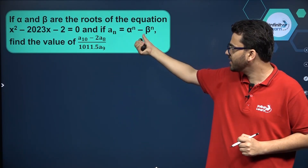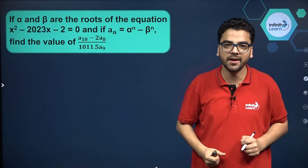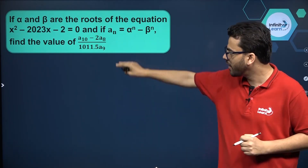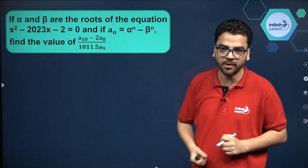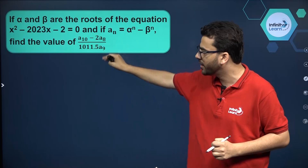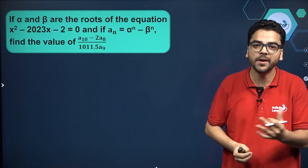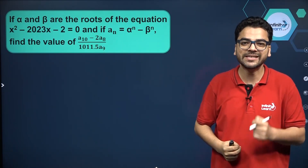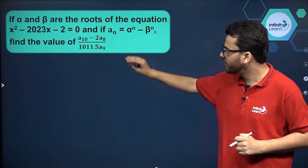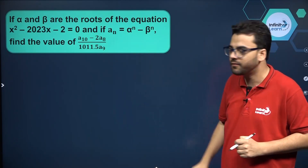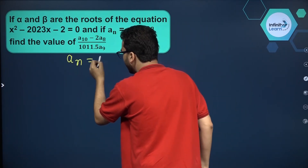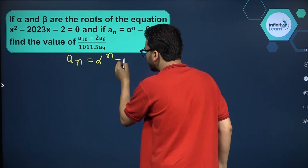Hello everybody. We are given a quadratic equation where Aₙ is equal to alpha raised to the power n minus beta raised to the power n, where alpha and beta are the roots of this quadratic equation. We have to find the value of this expression. If you try to actually find the values of alpha and beta and put them in, it will take too much time. There is a trick to solve these types of questions, so let's start.